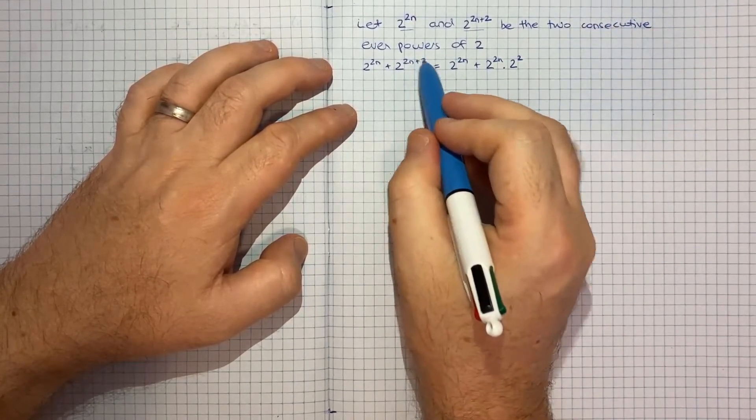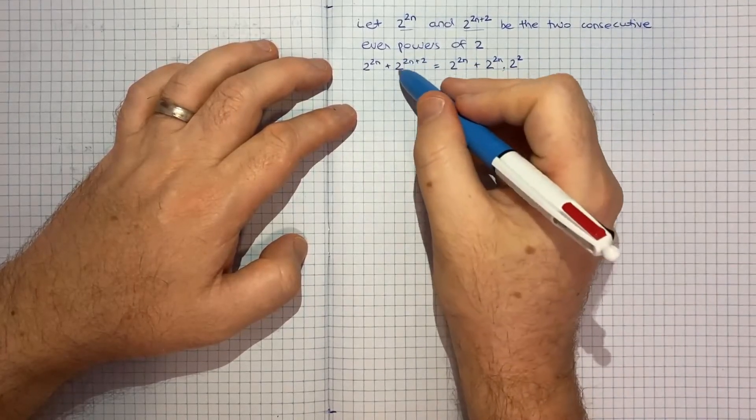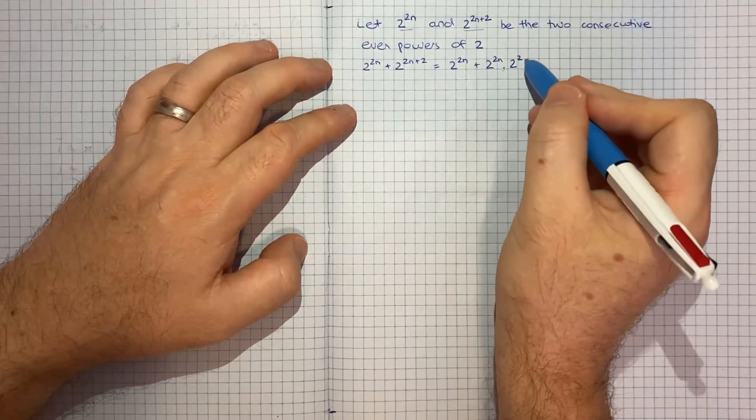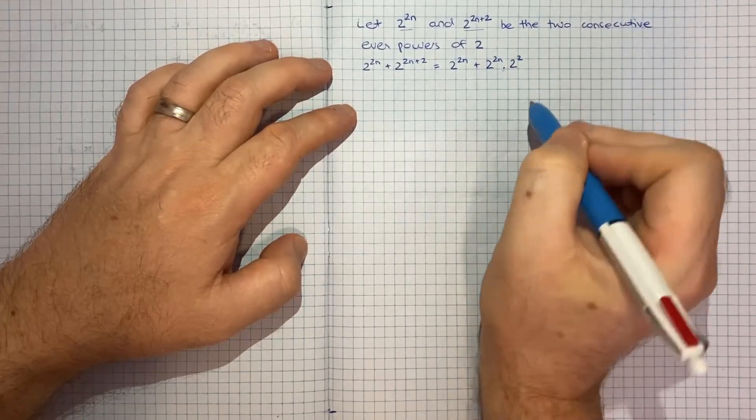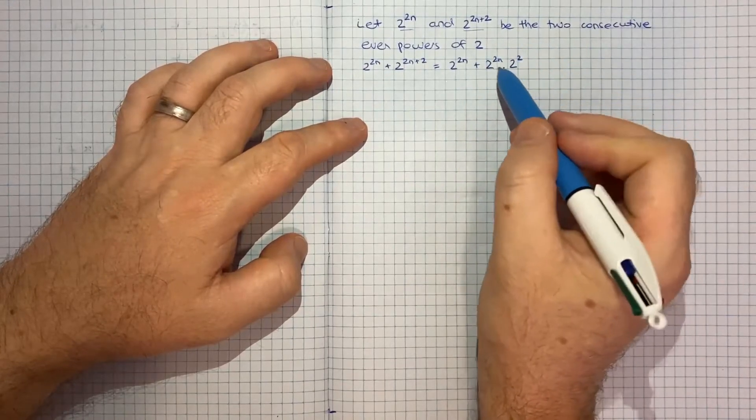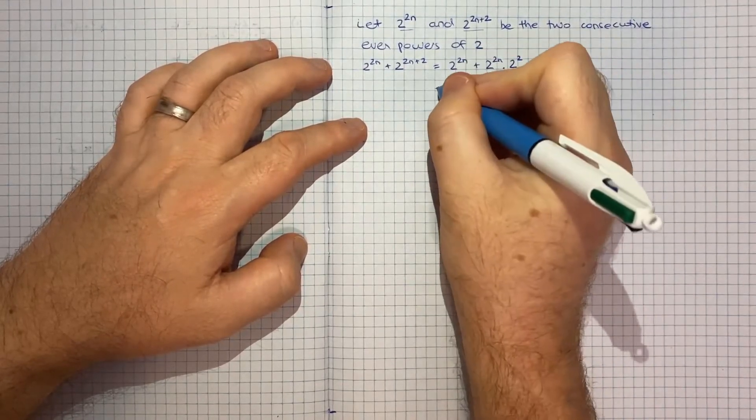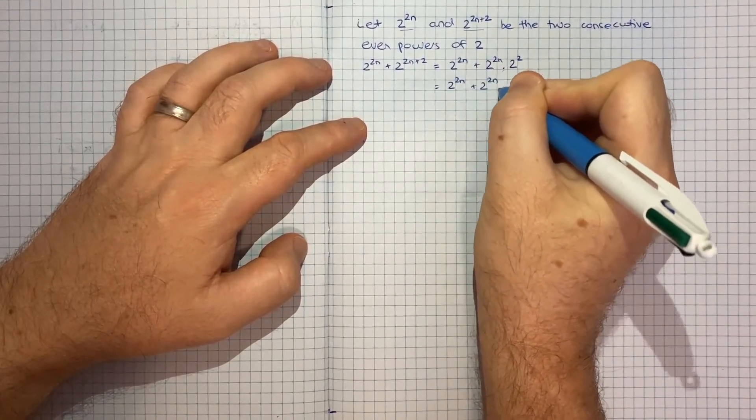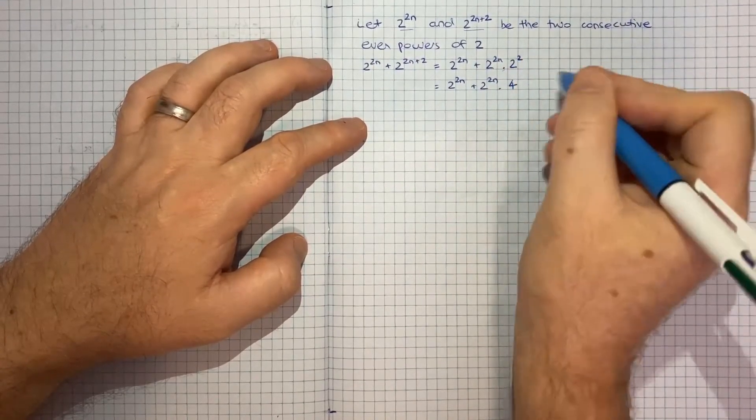This plus here, they've got the multiplied by a common base and then you can just have the exponents separated. So now I can simply see that I've got 2 to the 2n plus 2 to the 2n times 4, since 2 squared is 4.